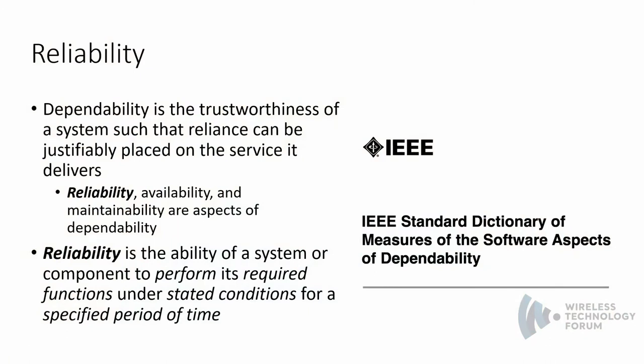First, terminology. Reliability is a subset of a larger concept called dependability. Dependability is the trustworthiness of a system such that reliance can be justifiably placed on the service it delivers — simply put, a trustworthy system we know we can count on. Reliability, availability, and maintainability are all aspects of dependability. All of these things have to be there for us to ultimately have dependability, and reliability is one of the components.